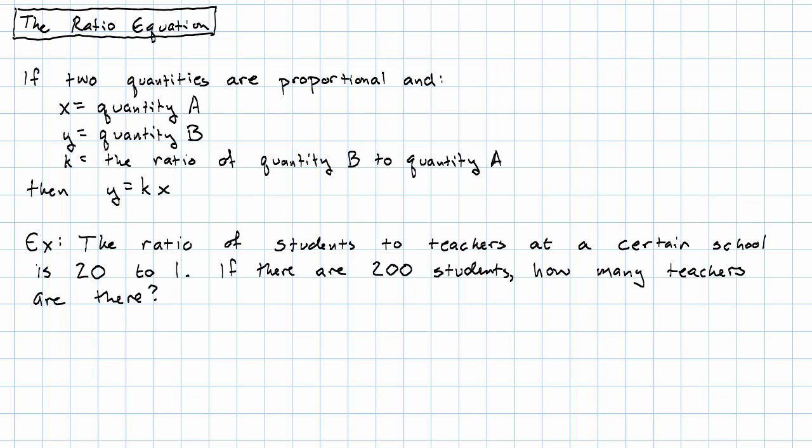Suppose that the ratio of students to teachers at a certain school is 20 to 1. Then we'll say that X represents the number of teachers, Y represents the number of students, and K, the ratio, is the number of students for every teacher.